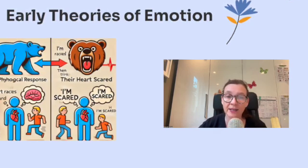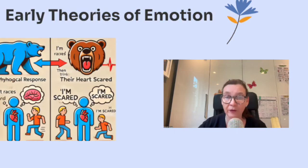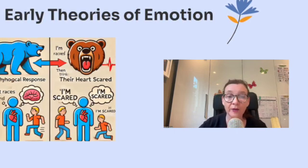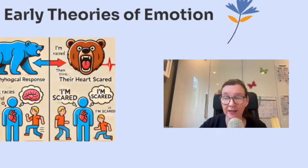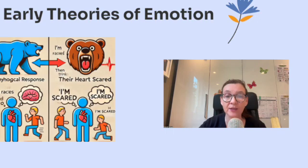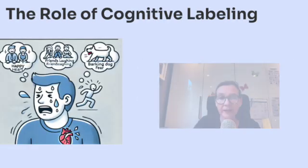Some theories suggest emotions arise sequentially — first the body reacts, then the brain labels. Others propose emotions arise simultaneously, with body and mind reacting at the same time. Next time you feel scared, excited, or happy, think about what was happening first — was it your body or your mind?